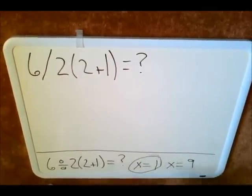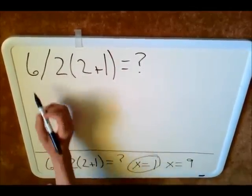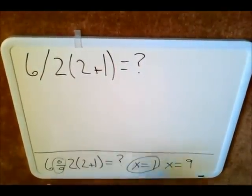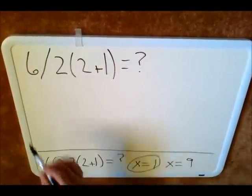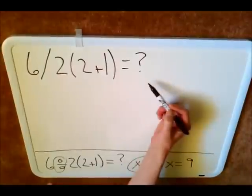Alright, so when we write this out, when we write the problem out on the computer, you can see it looks like this. This symbol doesn't even exist unless you use an alt code. So it's going to look like this when you write it on the computer.